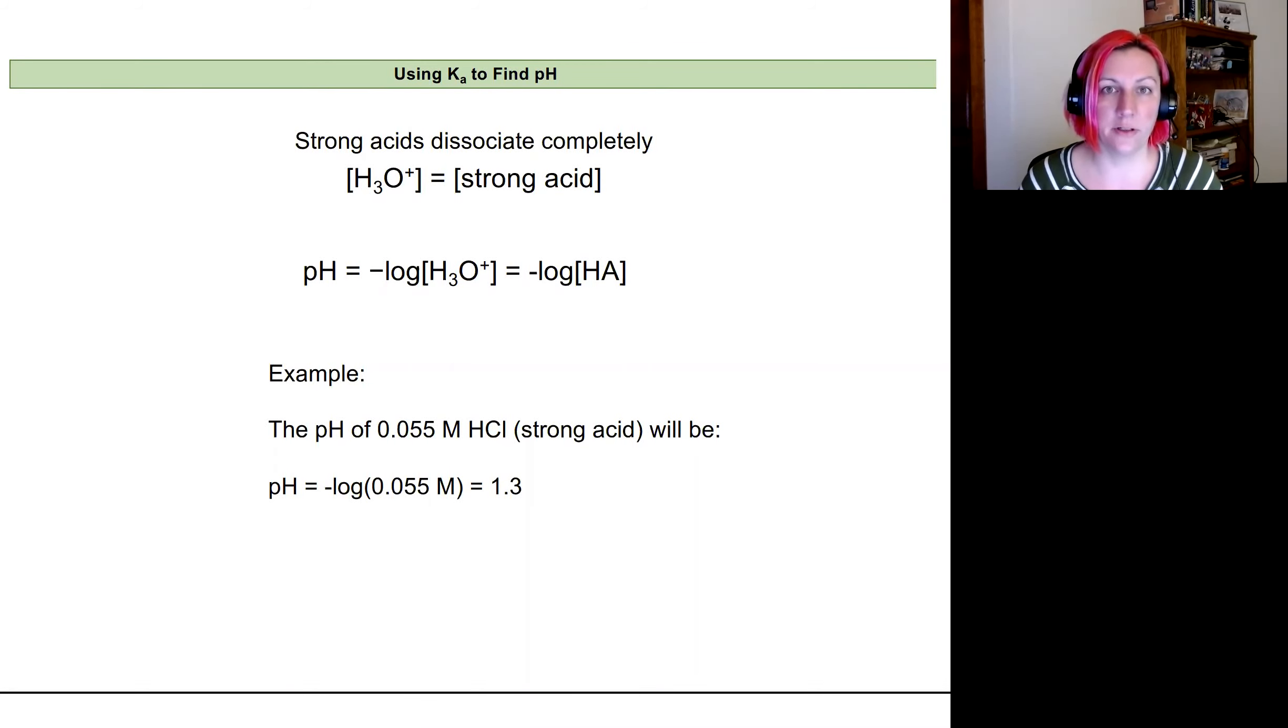Now let's look at how to use our equilibrium constant for acid dissociation reactions, that acid ionization constant, to figure out the pH of a solution.